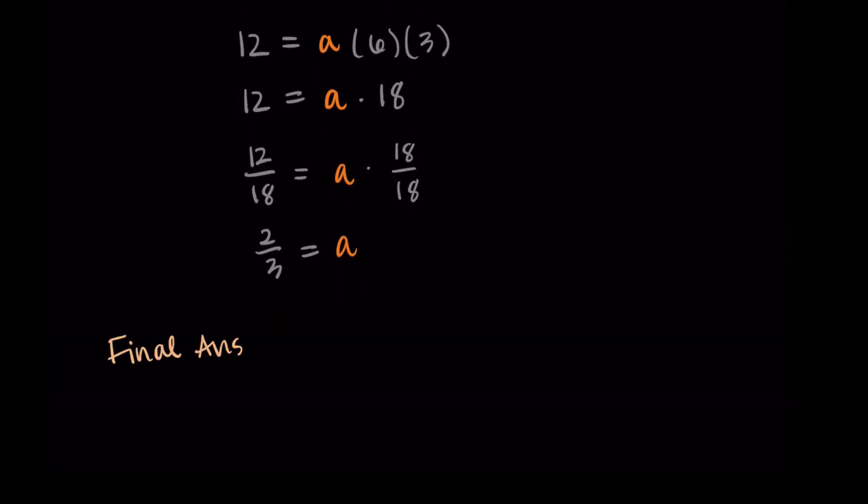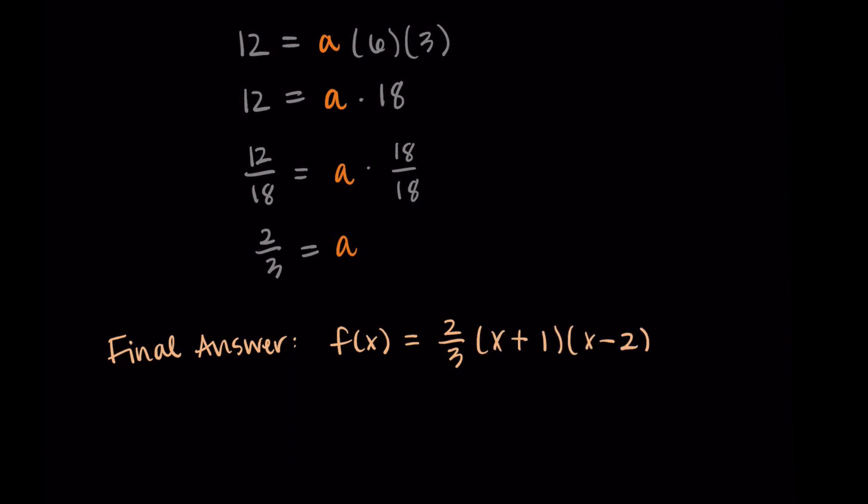So from this, we get our final answer. My function f(x) is equal to 2/3, that's my a value, times (x + 1)(x - 2). And there we go. That's it.